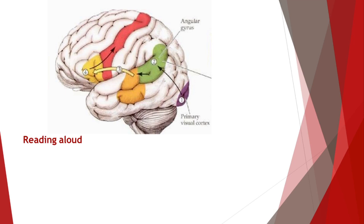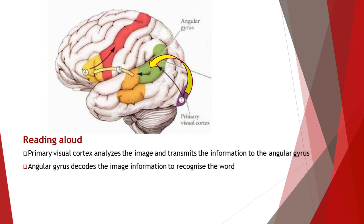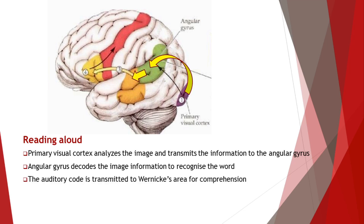When a person is reading aloud, they look at the reading material and move their eyes through the lines they are reading. This image is received and analyzed by the primary visual cortex. The signal is then transmitted from the primary visual cortex to the left angular gyrus, which decodes and translates the visual form of the word into its auditory chord. The auditory chord is then transmitted to Wernicke's area for language comprehension.